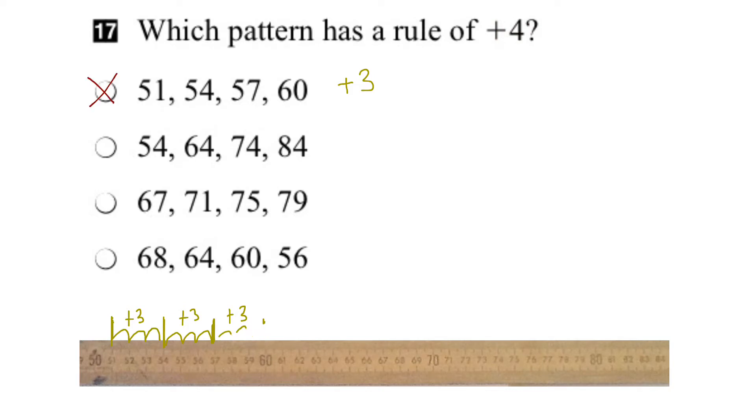Let's try the next pattern. We're going to begin with the number 54, then to 64, then to 74 and 84. So let's locate those on our ruler. Here's 54, 64, 74, and 84.